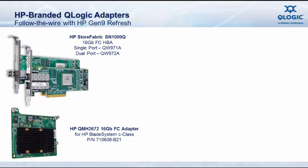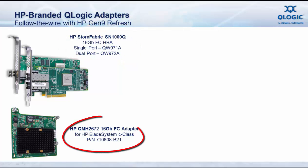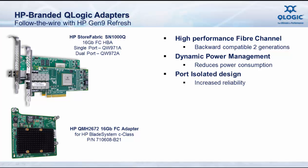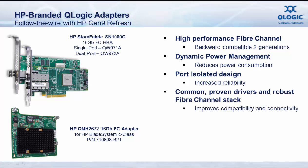For HP ProLiant and Integrity Rack and Tower Servers, use the HP StoreFabric SN1000Q from QLogic. And for the HP Blade System Gen9 Servers, use the HP QMH2672 16GB Fibre Channel mezzanine adapters. These HP adapters from QLogic provide industry-leading performance and backward compatibility with both 4GB and 8GB SAN environments. QLogic's dynamic power management provides an optimized power profile to save power and cooling costs of the overall system. All these adapters utilize a port-isolated design with dedicated processors and memory as well as firmware for each port on the adapter for predictable per-port performance and reliability. QLogic's proven driver and Fibre Channel stack ensures compatibility with thousands of storage and operating system combinations, and the use of a common driver and firmware installation saves time by eliminating any potential interoperability issues.